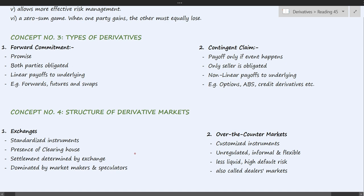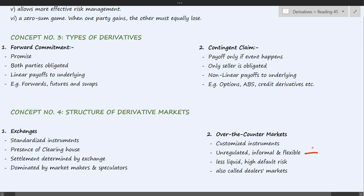In contrast, over-the-counter (OTC) markets are in-person markets where contracts can be customized as per the needs of the parties. These markets are unregulated, informal, and flexible — the terms of the contract are entirely determined by the parties, and honoring or dishonoring the contract is up to them. Because these are customized instruments, they are less liquid and carry a higher risk of default.